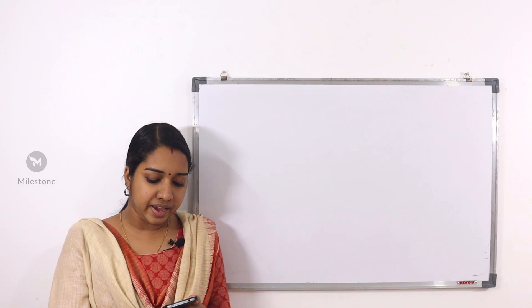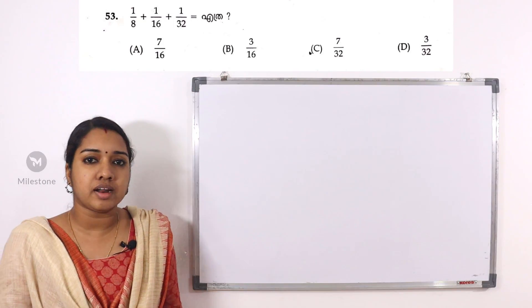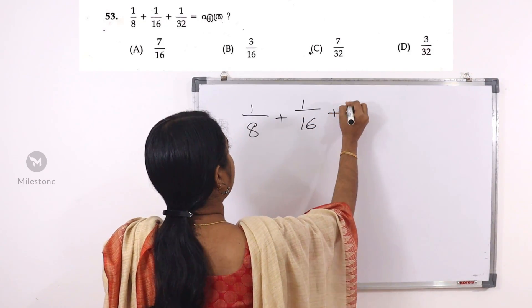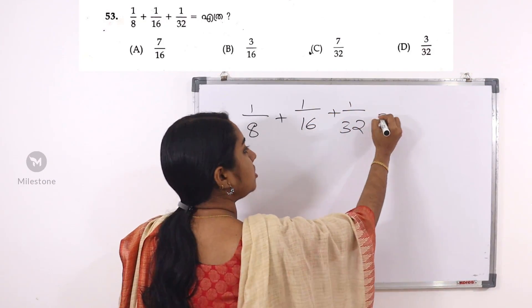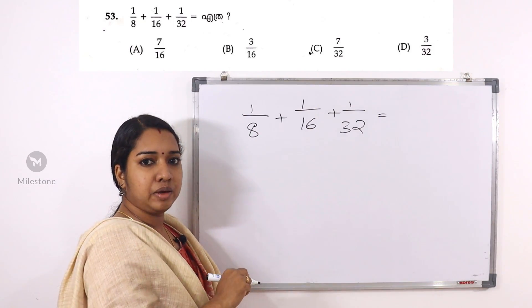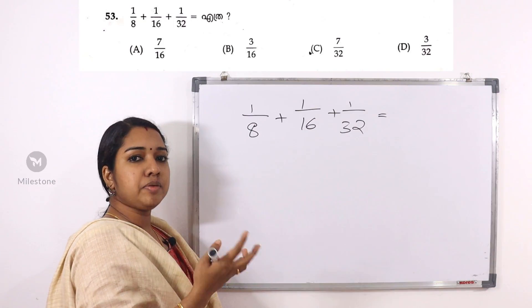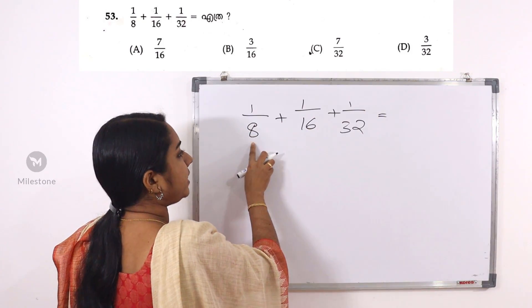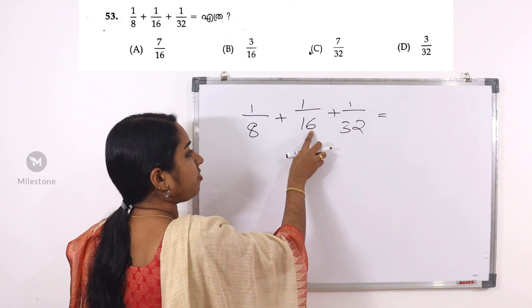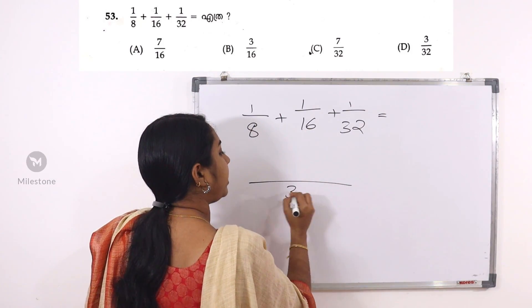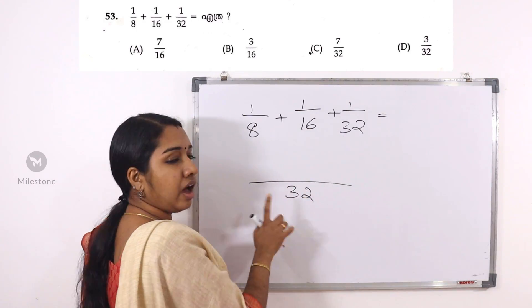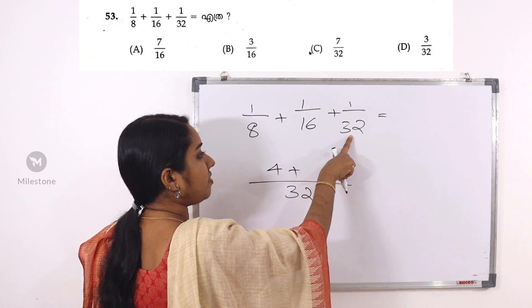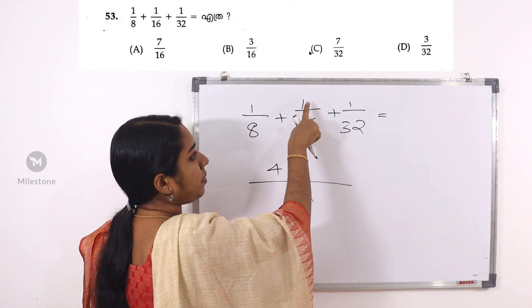The first question is: 1/8 plus 1/16 plus 1/32. The second part of the first question is 6 plus 1/4 by 3, class at 13.